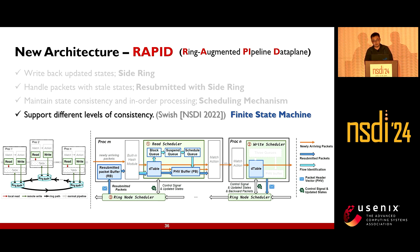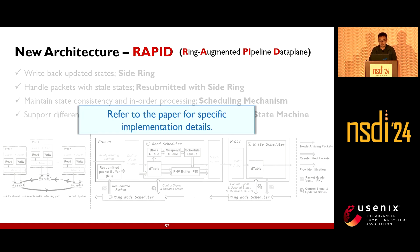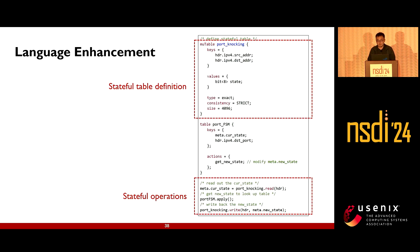Since not all stateful functions require strict consistency — for example, sketch-based applications have relatively loose consistency requirements — Rapid adds multi-level consistency support. Users are no longer required to carry out complex designs to maintain state consistency. In addition, to facilitate user programming, we provide more generalized state operations and state tables.